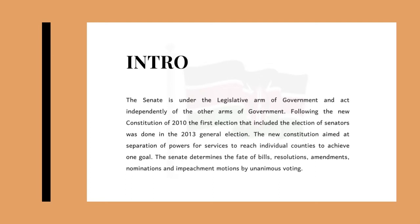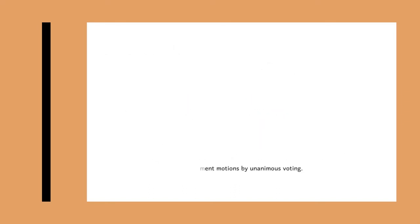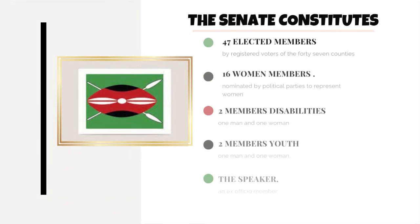The Senate determines the passing of resolutions, amendments, nominations, and impeachment motions by unanimous voting. There are 47 counties in Kenya, so 47 members are elected to the Senate. These 47 members need to meet the criteria provided by the constitution and are related to the registered voters of the various constituencies where they are running.